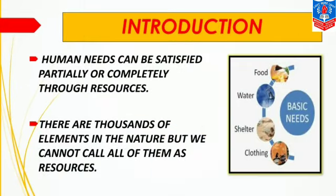Now let us have a look at the introduction. The first point is human needs can be satisfied partially or completely through resources. Human needs are unlimited, but the basic needs of a human are air, water, food, clothing and shelter. These human needs can be partly or completely satisfied through the use of these resources.